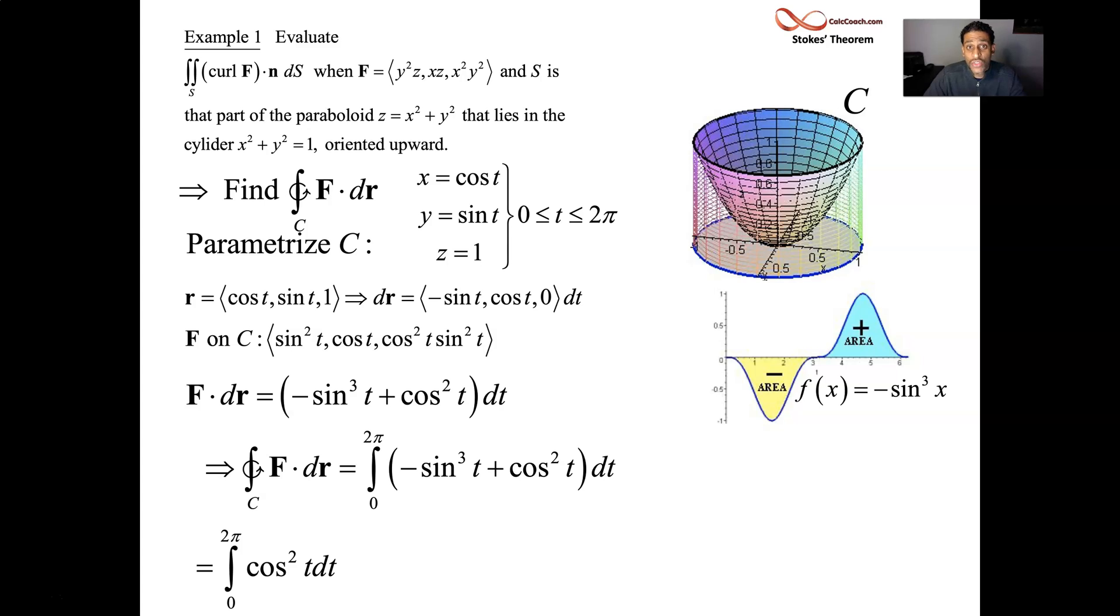The function cosine squared is even. There's an identity that we need for that. It's a half angle identity. That cosine squared t is one half, one plus the cosine of double t. And then we have something we can integrate.